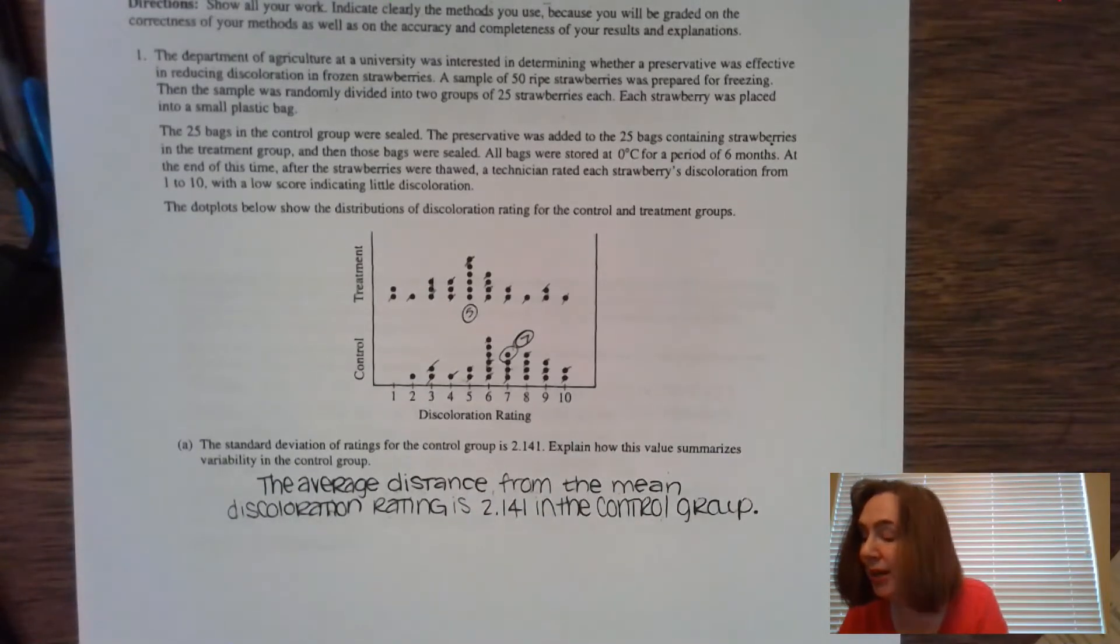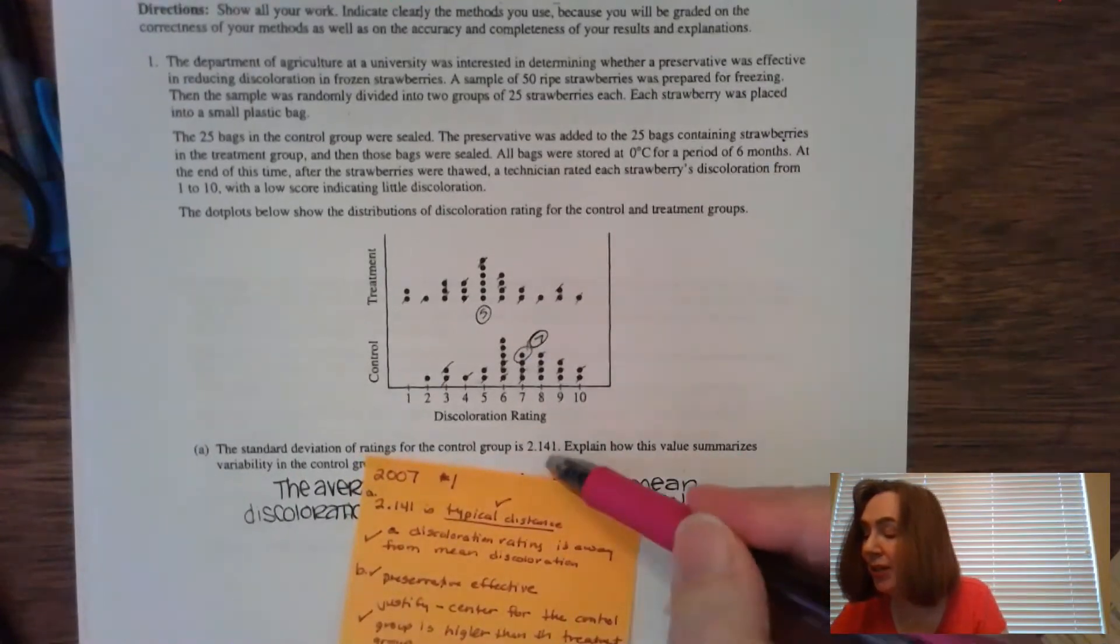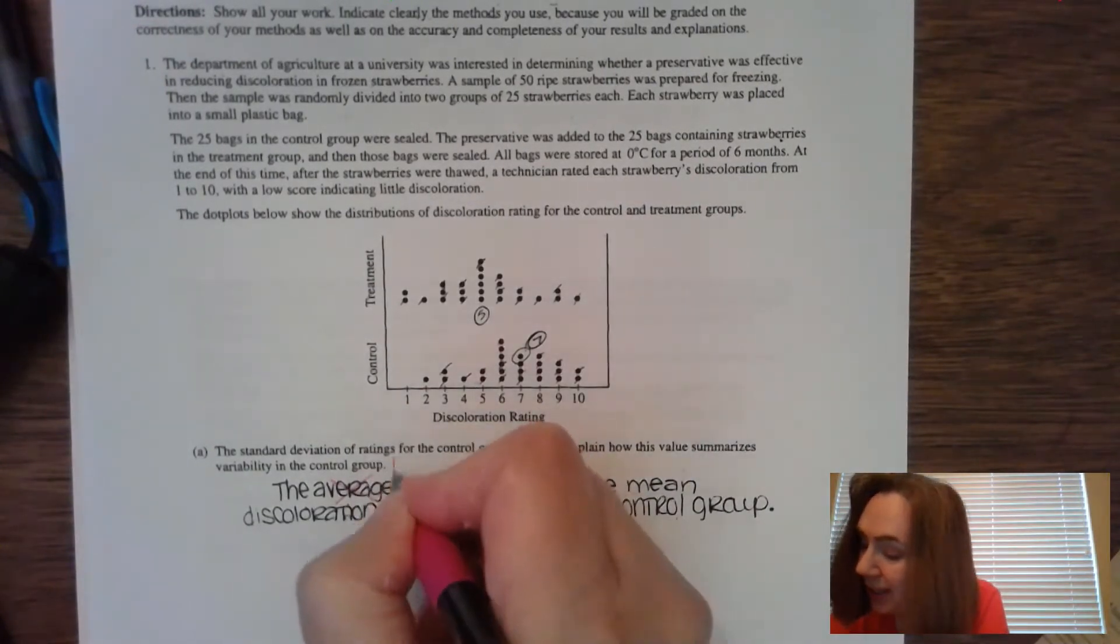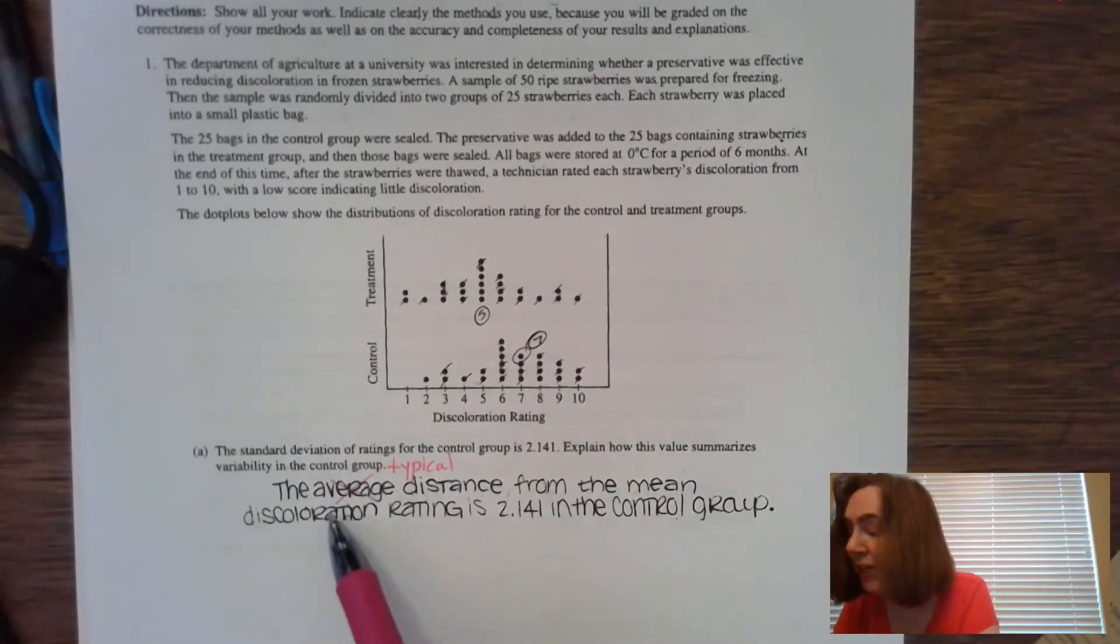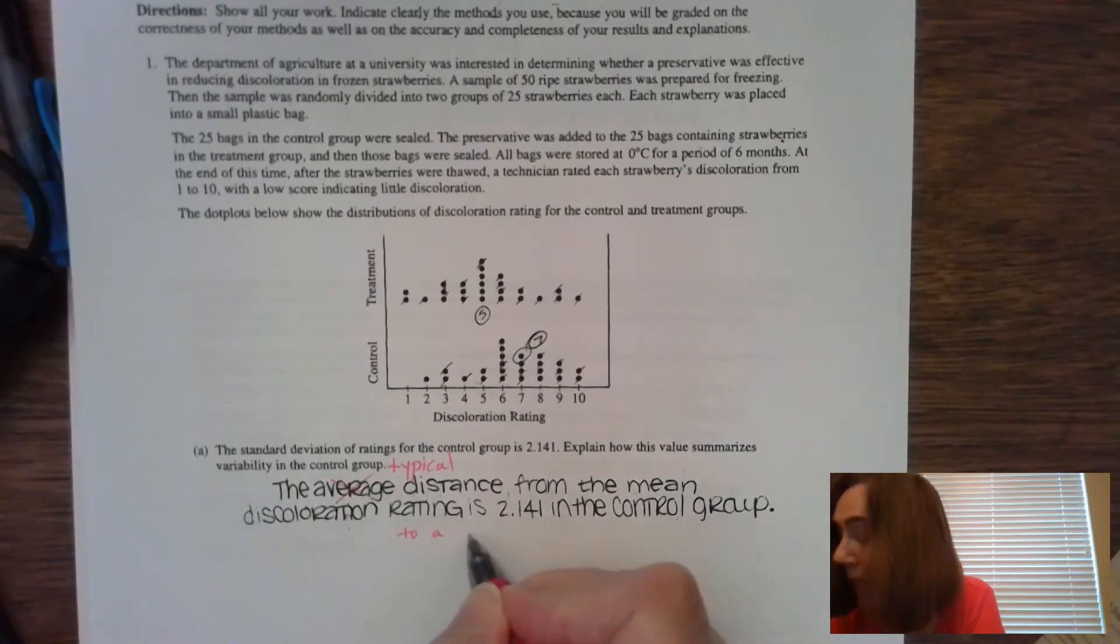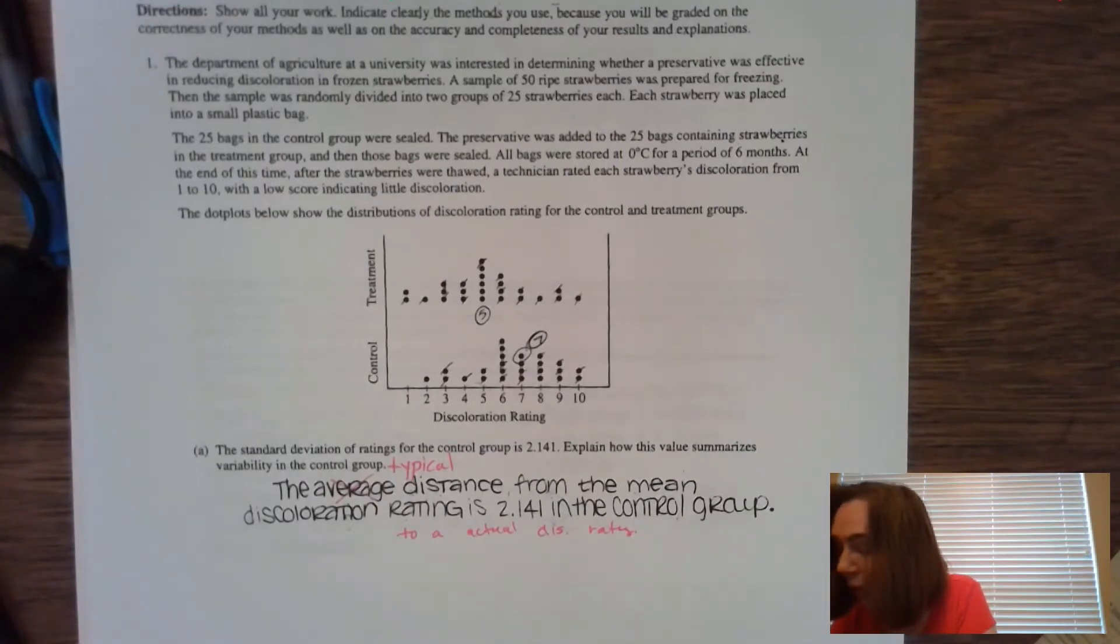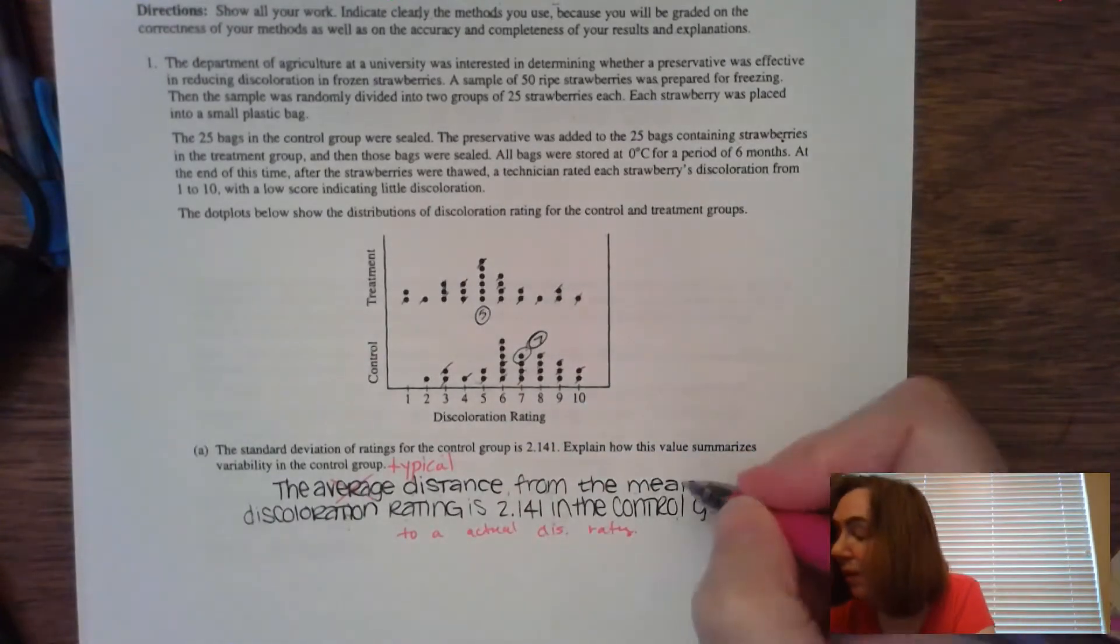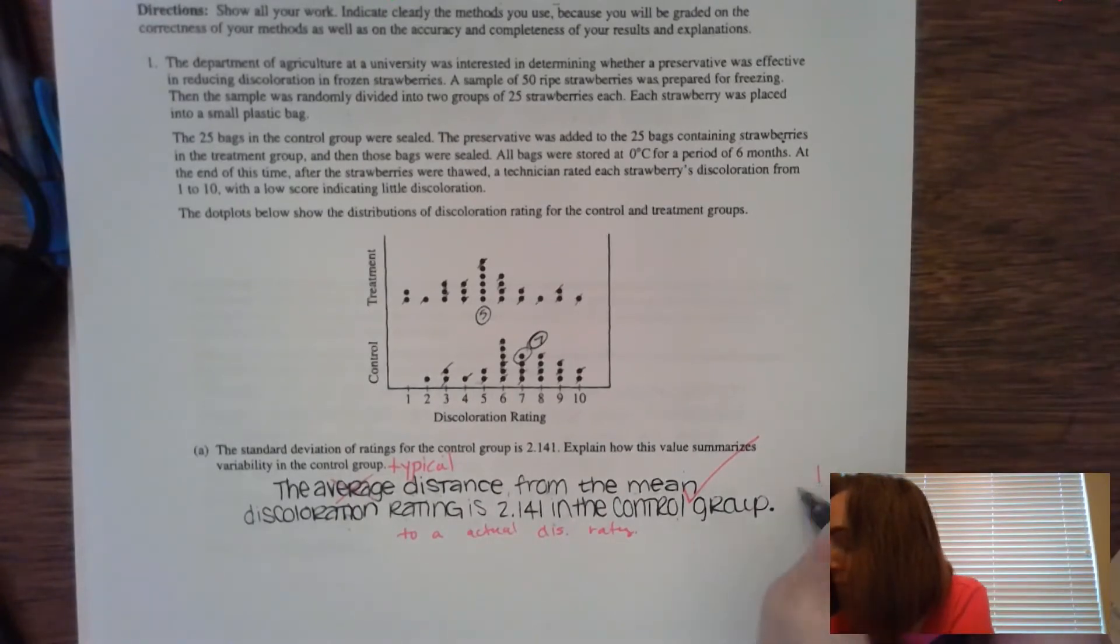Part A says the standard deviation of ratings for the control group is 2.141. Explain how this value summarizes variability in the control group. Well, this one we should know. They give us the standard deviation, which is 2.141. We want to make sure that we recognize that it is the typical distance. So the first check is for referencing that it is a typical distance from the mean discoloration in the control group. So it's the typical distance from the mean discoloration to an actual discoloration rating. You're going to get one check for making sure that it is going to be a typical distance, and then we have to generalize what that typical distance is. It's from the mean, second check. So this one is worth two points. My person got one out of two.